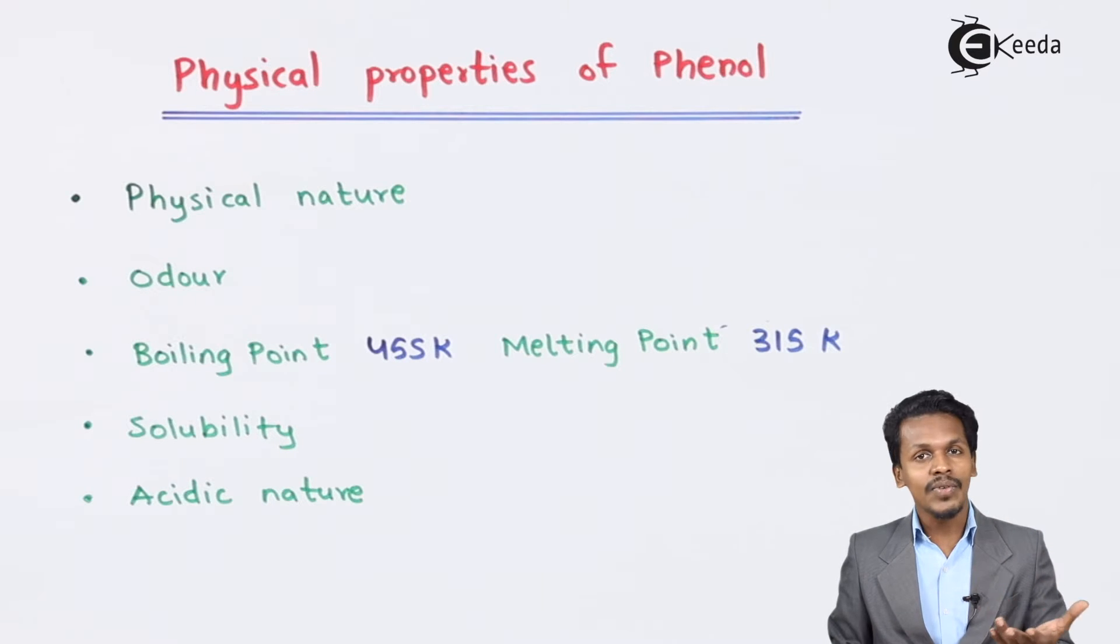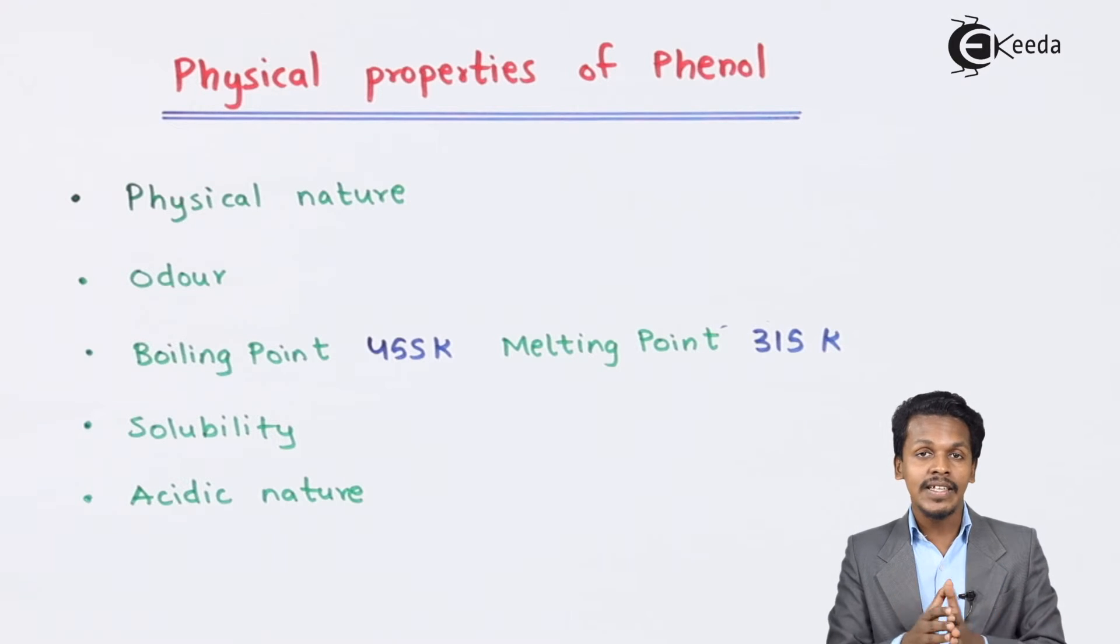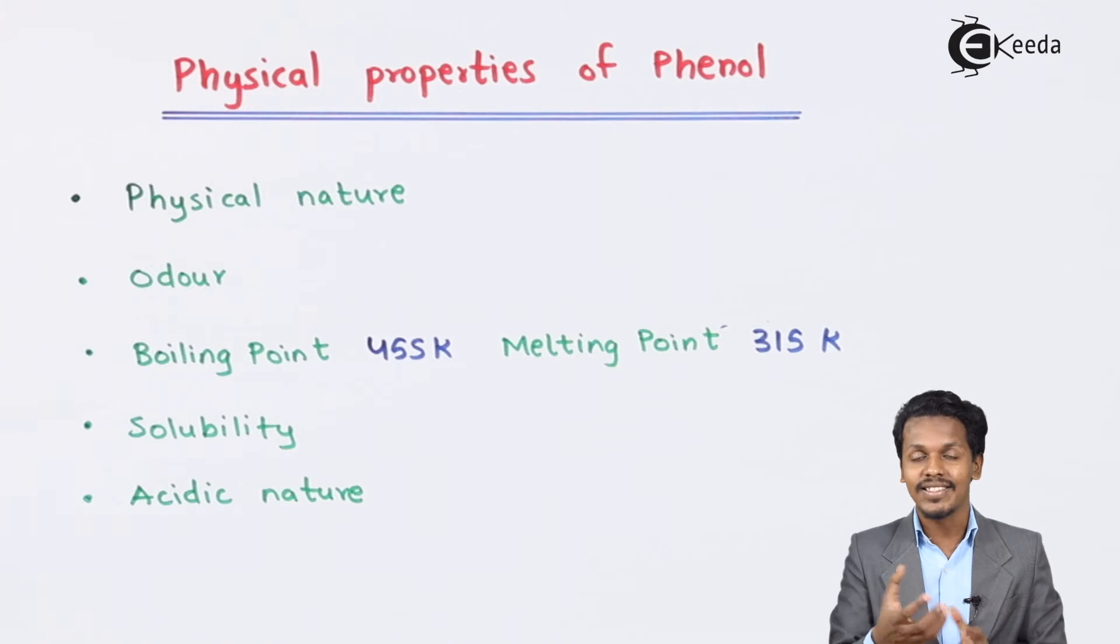And talking about the next one that is acidic nature. So phenol is basically weaker acid compared to H2CO3 which is also known as carbonic acid. So that's the reason that phenol is also known as carbolic acid, because it has an acidic nature.